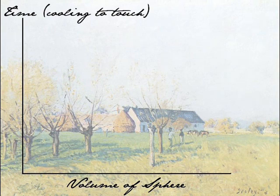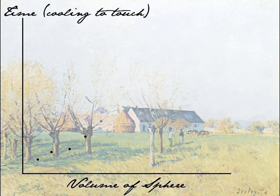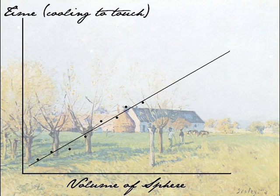He measures the smallest one first and notes the time, then does the second smallest one and so on and so forth until he has all two dozen of the globes done — though in my example I've only got eight. What he does next is find a mathematical relationship between the volume of his spheres and the time they took to cool.